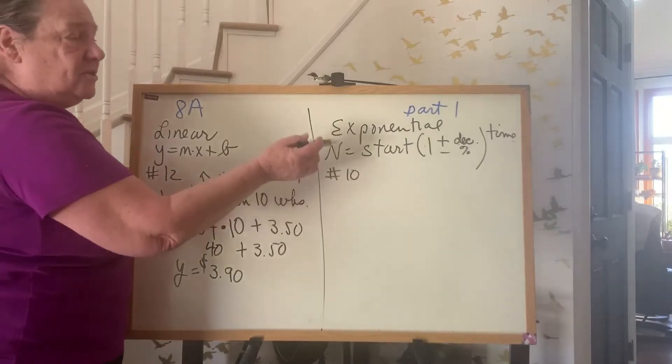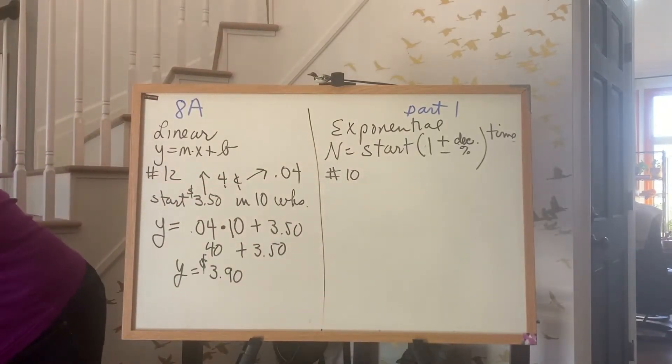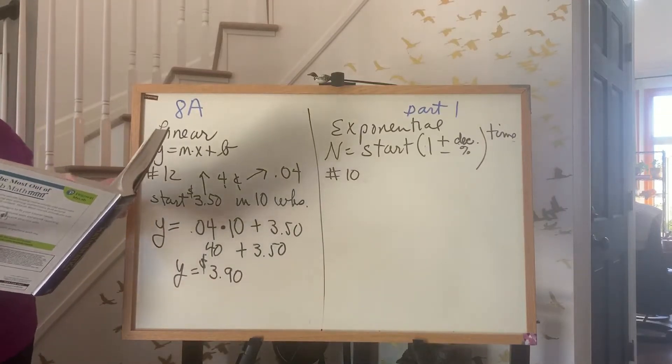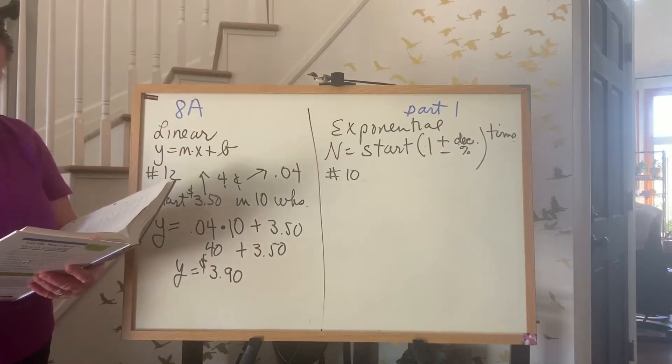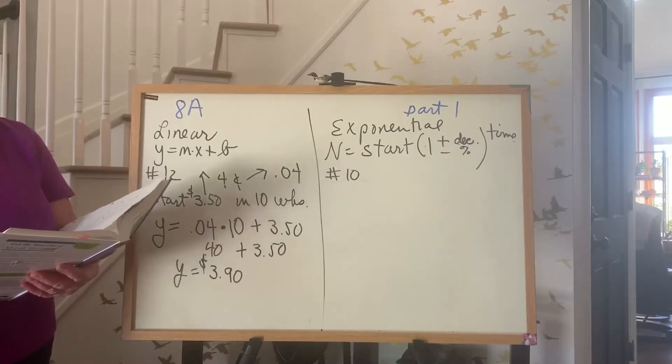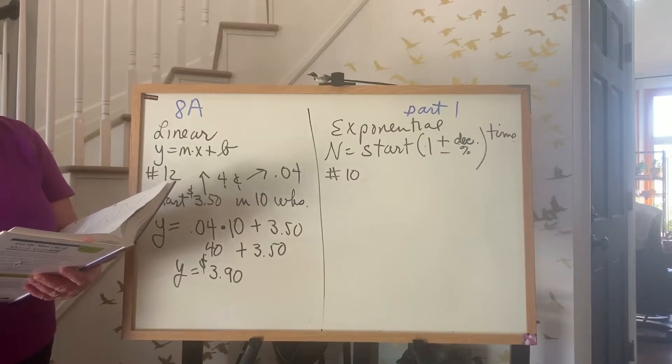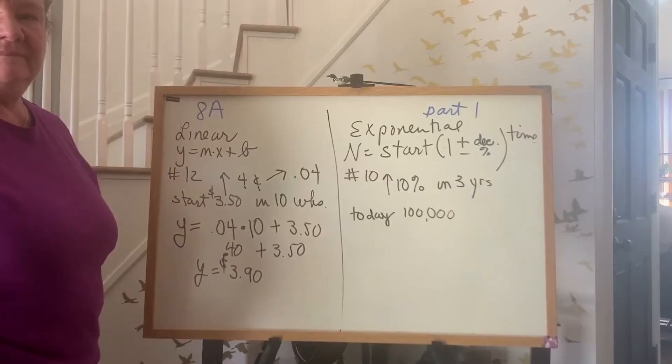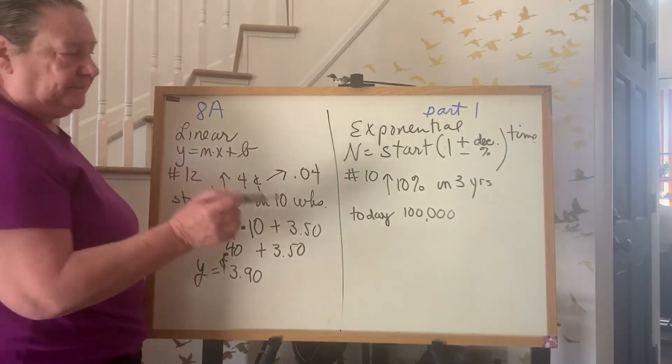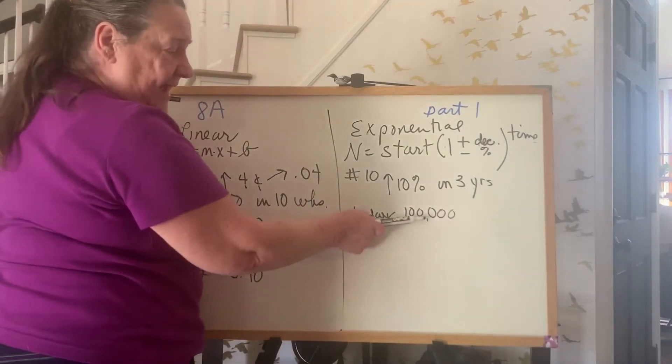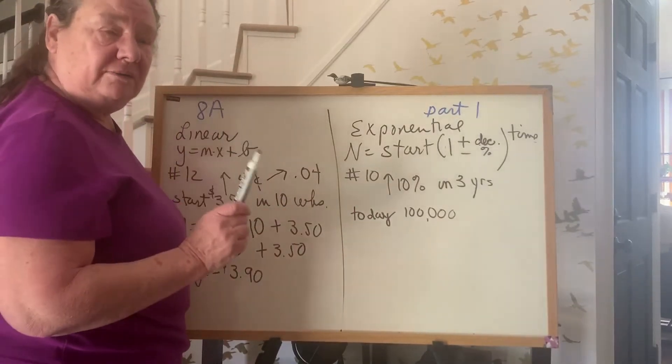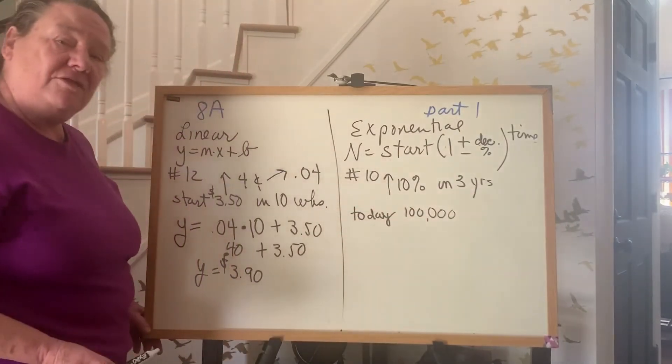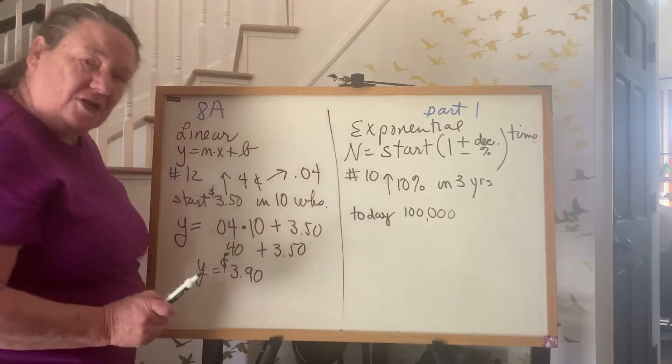So the next one I want to do is exponential. And it is your number 10. It says the property of Winesburg, which is Winesburg, Ohio, which is a famous poem, is increasing at the rate of 10% per year. If the population is 100,000 today, what will it be in three years? This is your number 10. The population of Winesburg, Ohio, today is 100,000 people. It's increasing by 10% per year. We want to know the population in three years. This is an exponential equation.